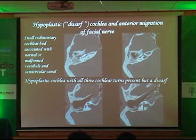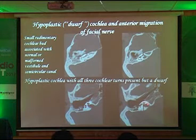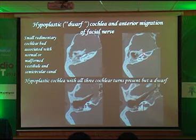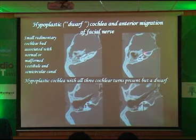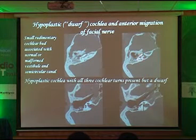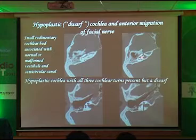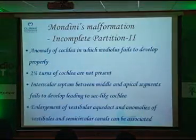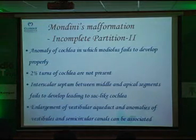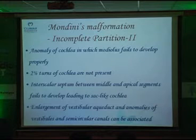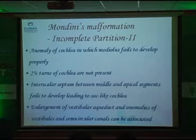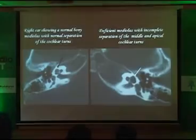You can have a dwarf cochlea — very small, but you still see all the turns, just a very small cochlea. In this patient, you also see anterior migration of the labyrinthine portion of the facial nerve. Mondini malformations are type IP2, where you don't have complete turns of the cochlea and the interscalar septum between the middle and apical turn is missing — all visible on CT with 0.2 or 0.3 mm sections.